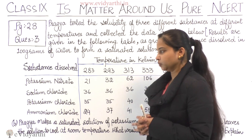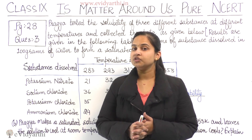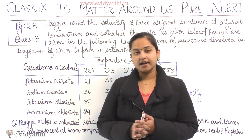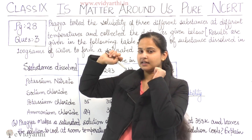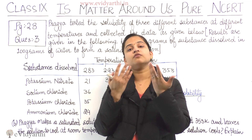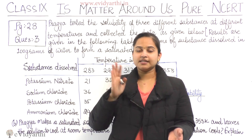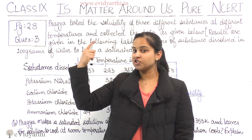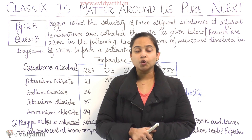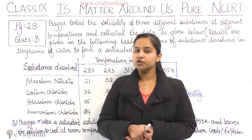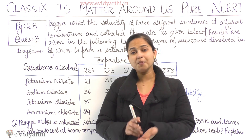The solubility of a salt increases as temperature increases. As we take the solution from an increased temperature back to normal room temperature, the amount of salt that can dissolve in water decreases, and the rest of the salt will be precipitated out.